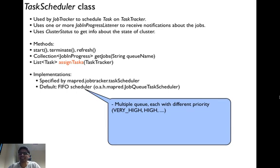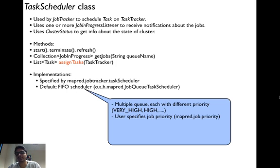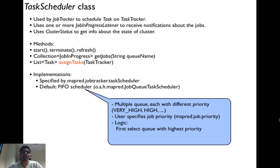However, the logic is slightly more complicated than that. There are multiple queues in this scheduler and each queue has jobs of different priorities. There is one queue for very high priority jobs, another for high priority jobs, another for medium priority jobs, and so on. The priority of a job is specified by the user using the property MapRed.Job.Priority. The scheduler first picks the queue with the highest priority and then uses FIFO logic within that queue — the job entered first is processed first.